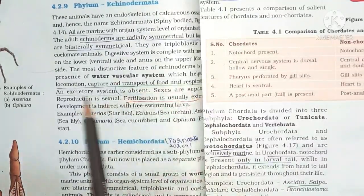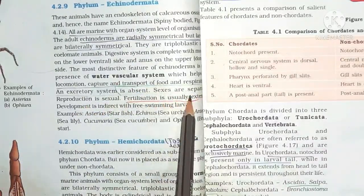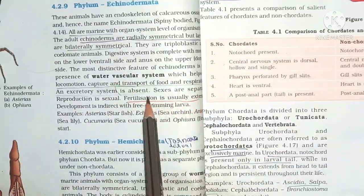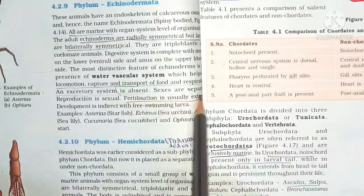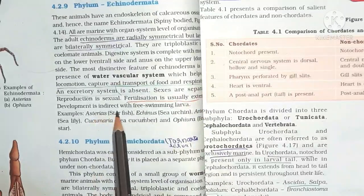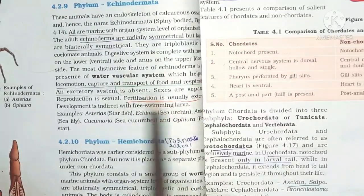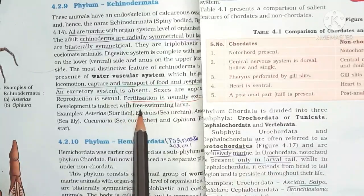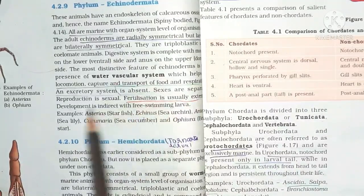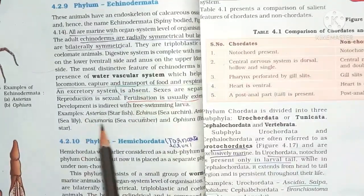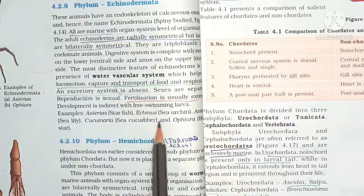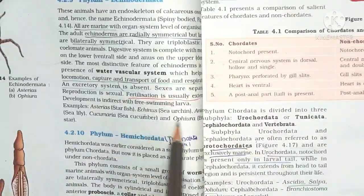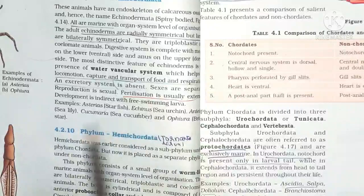Sexes are separate. Reproduction is sexual. Fertilization is usually external. Development is indirect with free-swimming larvae. Examples: Asterias (starfish), Echinus (sea urchin), Cucumaria (sea cucumber), Ophiura (brittle star).